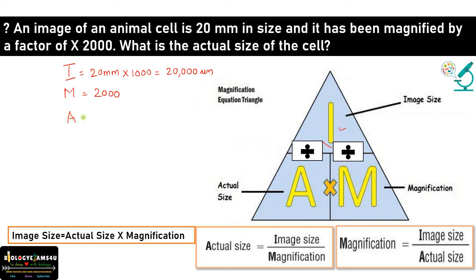So we have to find out the actual size. Actual size as per the magnification equation triangle, it is I by M. So substitute the values, I is 20,000 by 2000. So it will be 10 micrometer.